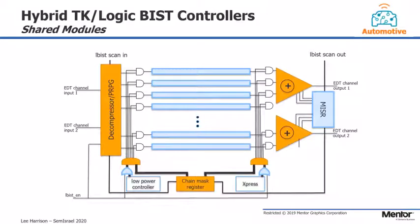With the Tessent TK LBIST hybrid solution, we combine ATPG with logic BIST, creating an IP that is both flexible and configurable between the two technologies. When used to test a block of logic, it can be configured in either ATPG or LBIST mode depending on the test scenario required. A lot of the functionality is very similar between the two, so it is possible to share much of the IP's logic, enabling both technologies to be on-chip with very small overhead — with only the MISR and some additional control logic being the significant addition for logic BIST. This is ideal for automotive, as we are adding the in-system test mechanism with minimal additional overhead.